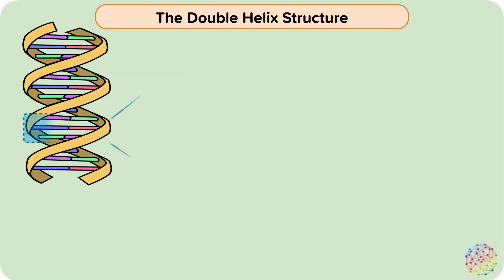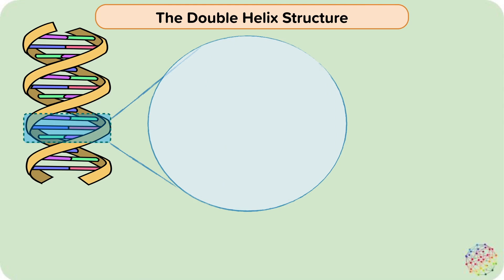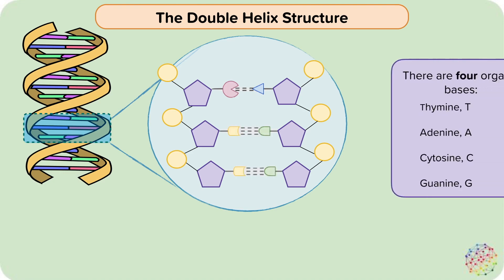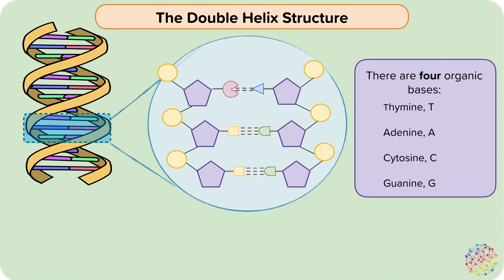Now let's look at how nucleotides of two strands are joined together. Here is the sugar phosphate backbone of two strands, and the bases attached to each nucleotide. There are four different types of bases that can be part of each nucleotide: thymine, adenine, cytosine, and guanine.